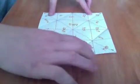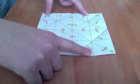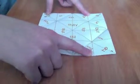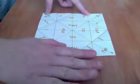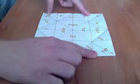So I want to instruct you on how to fold and use a cootie catcher. I'm starting with a square piece of paper that I have cut out of an eight and a half by eleven sheet.